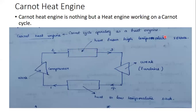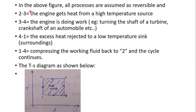By burning of the petroleum fuel, a high temperature is generated, and this high temperature source supplies the necessary heat for the working of this Carnot heat engine. In the above figure, all the processes are assumed as reversible. Process 2-3 is where the engine gets heat from the high temperature source, which is the combustion of the petroleum fuel generating a very high temperature.